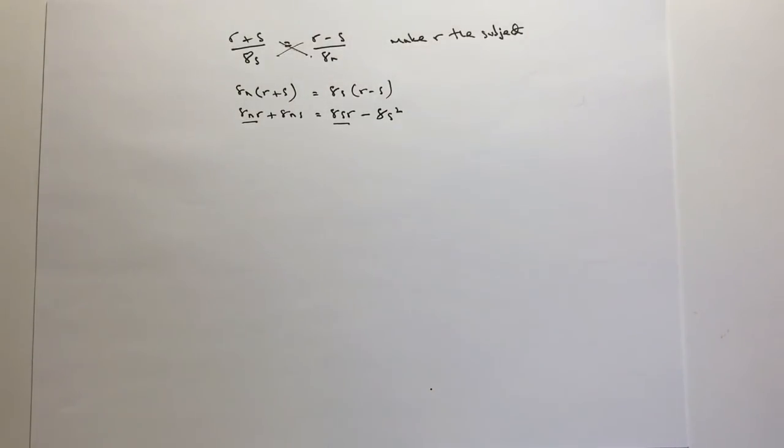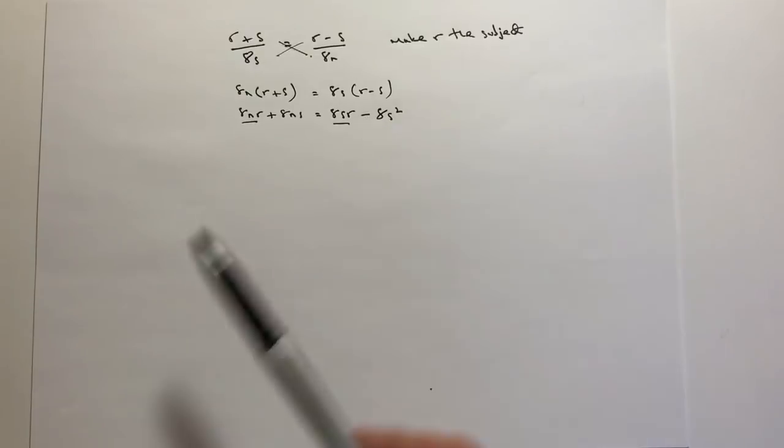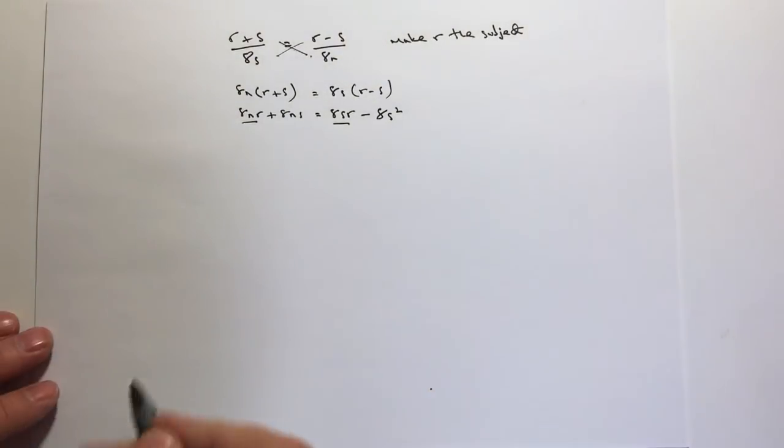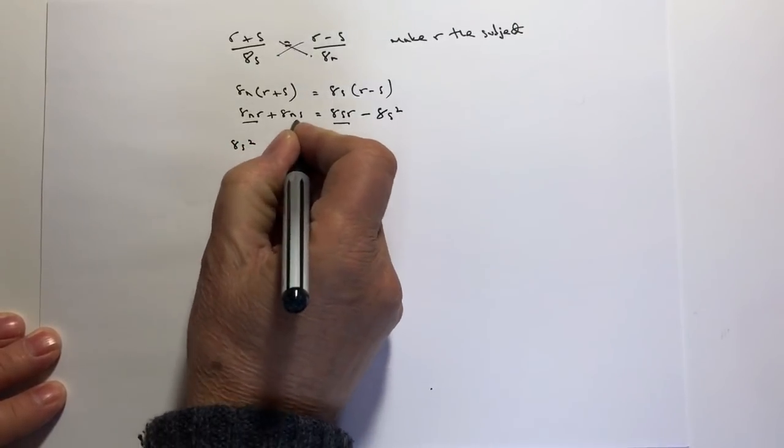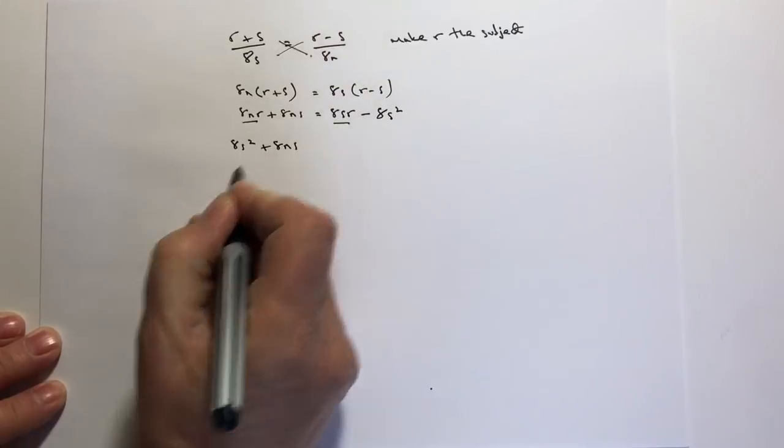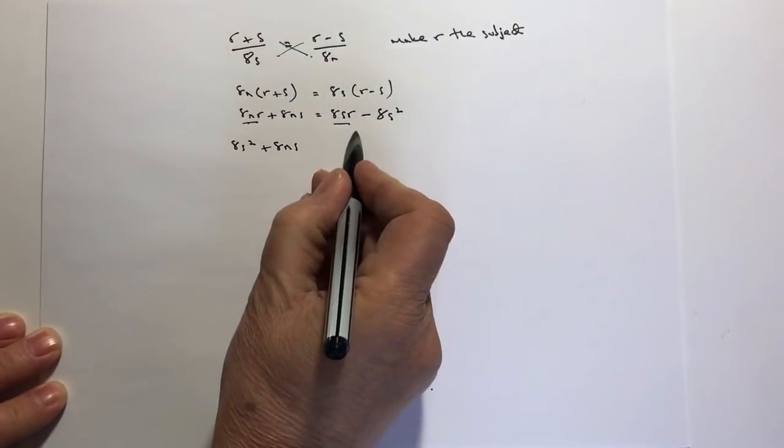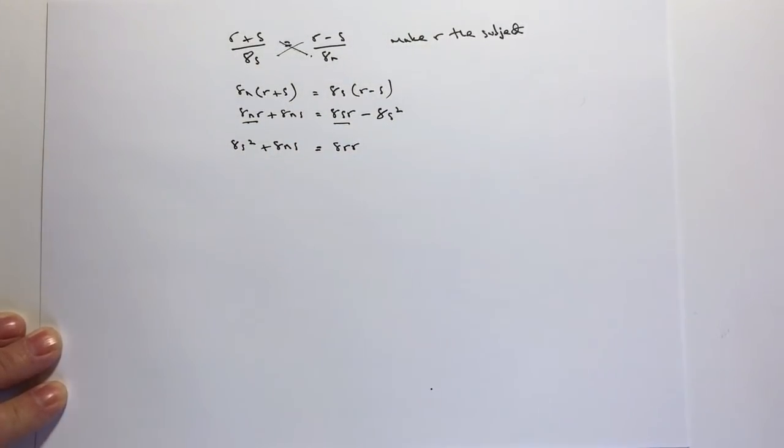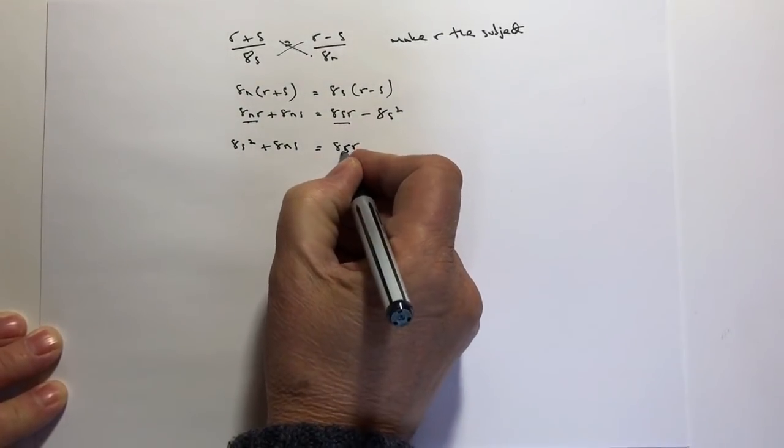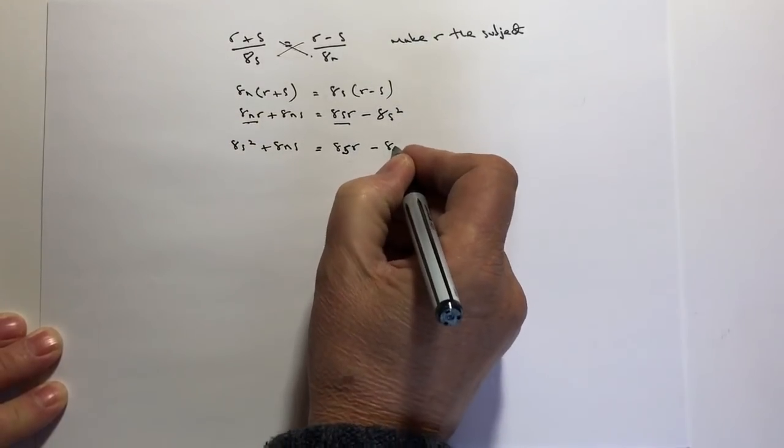And the reason I'm going to do that is because if I take the 8s squared, this one here over to the left-hand side, it means this negative becomes a positive. So I end up with, on this side, 8s squared plus 8ns, and then I'm going to take this 8nr, and I'm going to move it over to this side. So I'm going to get 8sr, which is the same as the one above it. Sorry about my writing, sr. And then I'm going to minus 8nr, which is this value over here.